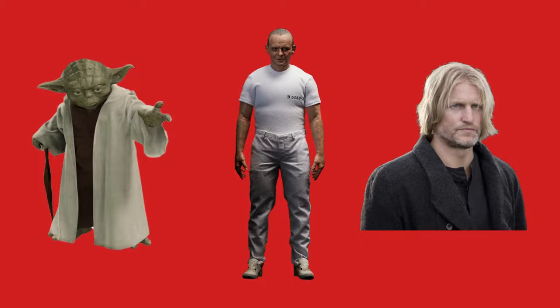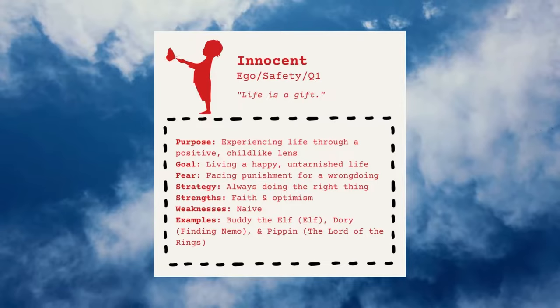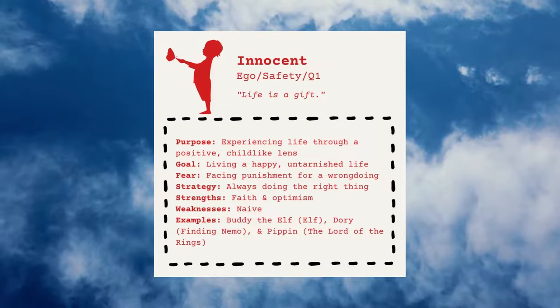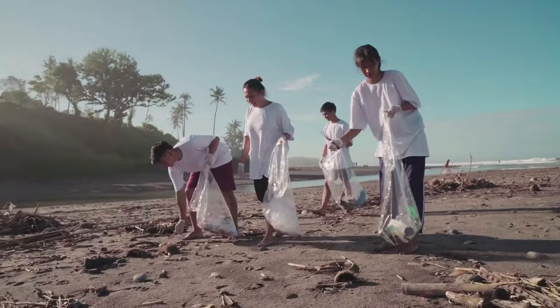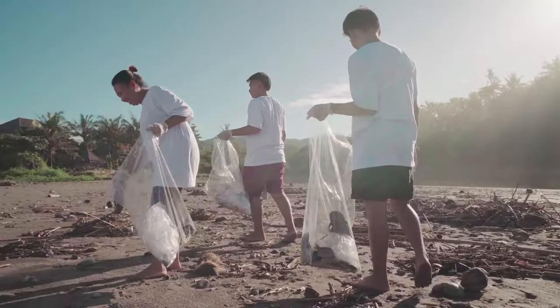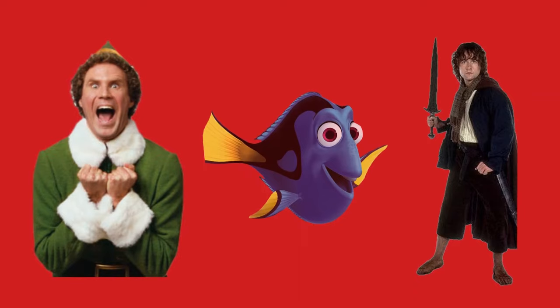The innocent is an ego-type archetype that believes peace is found in the comforts of their own safety. Their purpose is experiencing life through a positive, childlike lens. These characters wish to live a happy, untarnished life, fearing pain and punishment for their wrongdoings. To avoid this, they always try to do the right thing. They possess an ample amount of faith and optimism, but can be quite naive and easily manipulated. Famous innocent characters include Buddy the Elf, Dory, and Pippin.